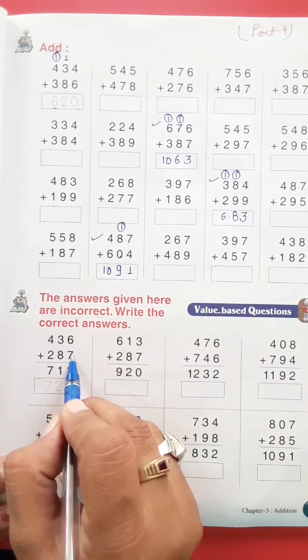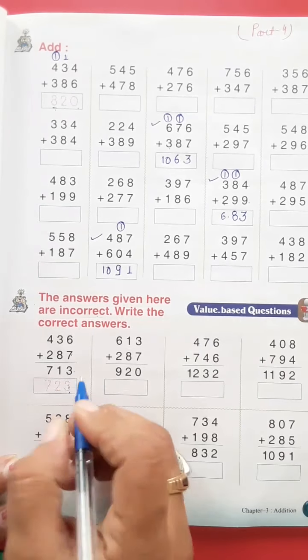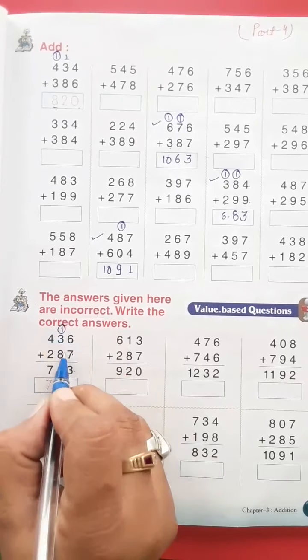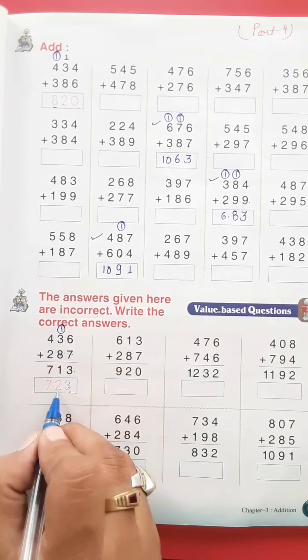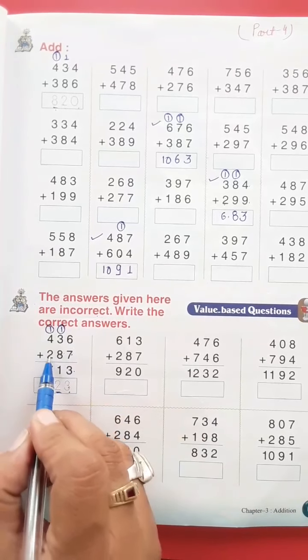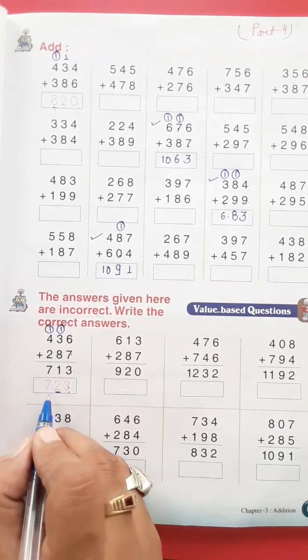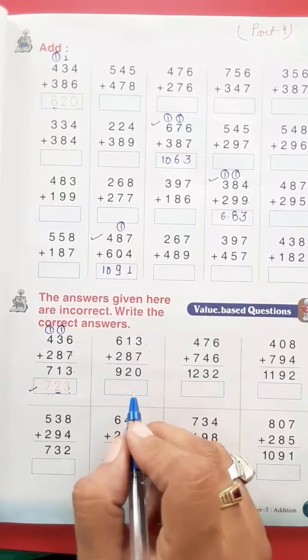First: six and seven is 13, 3 and 1 carry. Three and eight is 11, plus 1 is 12, 2 and 1 carry. Four and two is six, plus 1 is seven. To correct answer kya hai: 723.